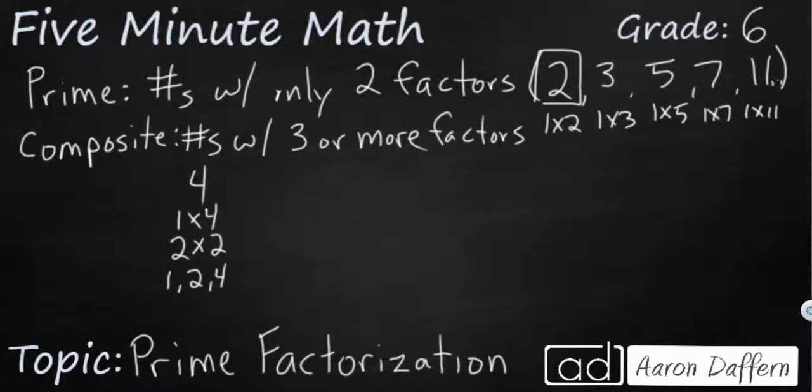Our next number that we're skipping is 6, because I can say it's 1 times 6 or 2 times 3. So it's got four factors: 1, 2, 3, and 6. And you notice 9 is not in here, because 9 is a composite number. Just because it's odd doesn't mean it's prime, because I can say 1 times 9 or 3 times 3. So now that we know the difference between prime and composite numbers, let's look at prime factorization.